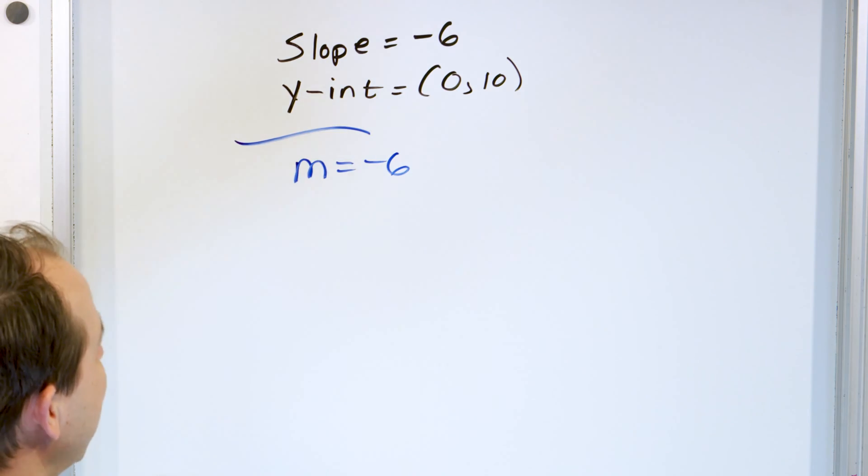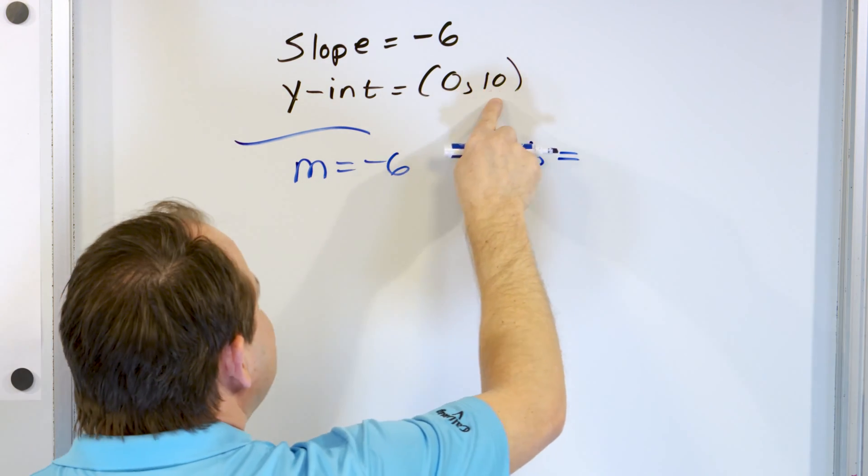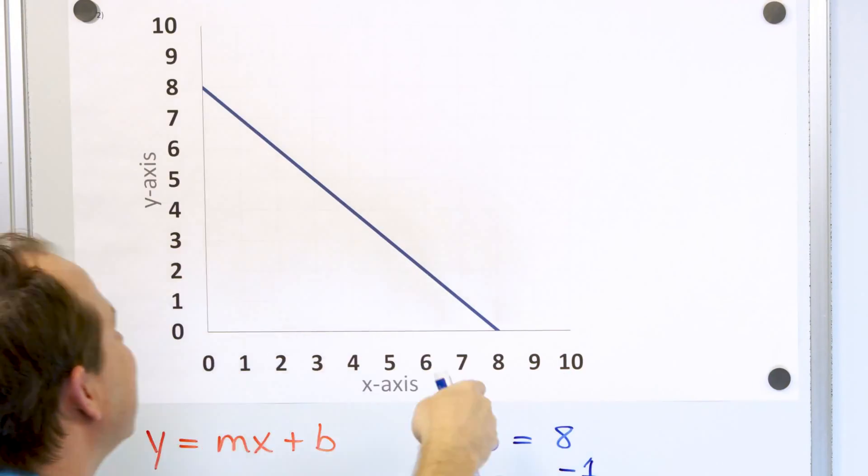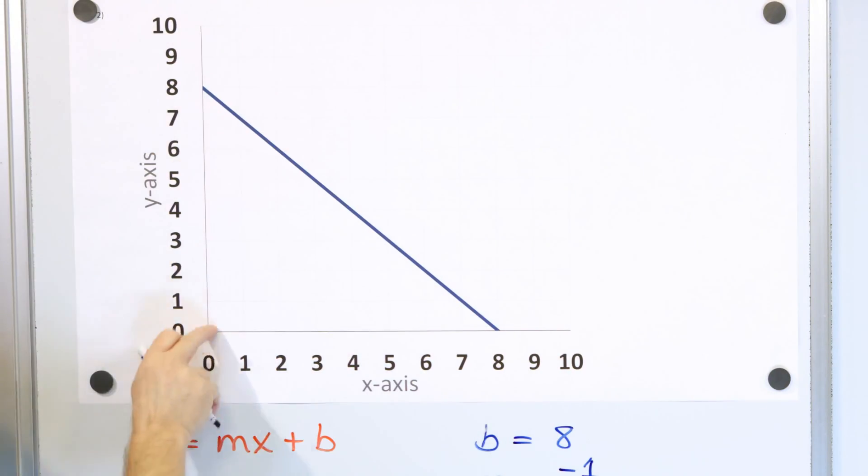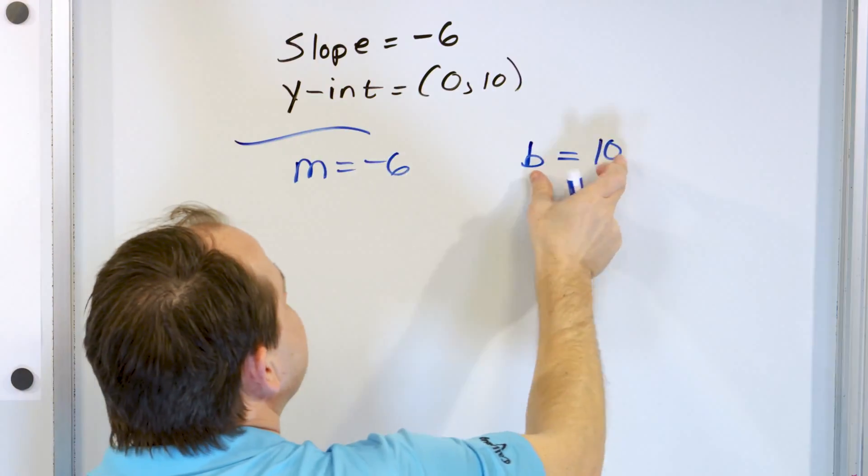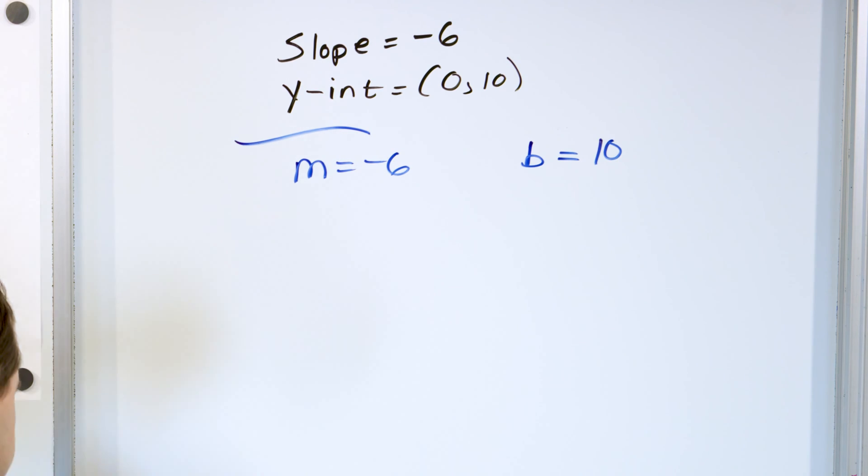And the y-intercept b is what? It's 10, right? Because the y-intercept is zero comma 10. Notice that anytime you cross the y-axis, it's zero for x and some number for y. So if the y-intercept is zero comma 10, it means the y-intercept is here. And when we write it down, we just say that b is equal to 10. So it's the y-value where it crosses the y-axis there.